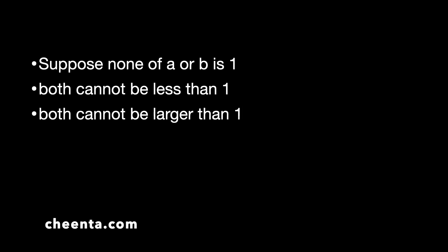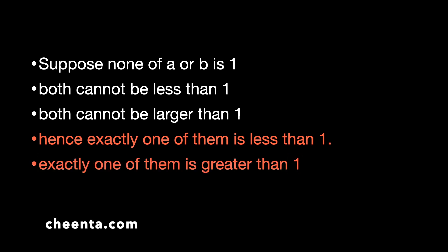Similarly, both of them cannot be larger than 1 because then their product will be larger than 1. Hence, we have this simple but very powerful conclusion that exactly 1 of A or B is less than 1 and exactly 1 of A or B is greater than 1. It's a very important conclusion, and we will be using this. So, without loss of generality, let's assume that A is less than 1 and B is greater than 1.